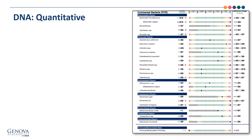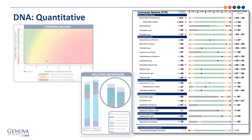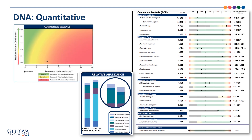The third page of the report lists the 24 commensal bacteria measured via PCR, looking at the organism's DNA. The overall balance of these organisms as a group was represented in the commensal balance and relative abundance graphics already reviewed on the front page. Since individual members of the microbiome don't act in isolation, it's difficult to glean individual significance of each organism on this page, which is why we look at them as a whole.